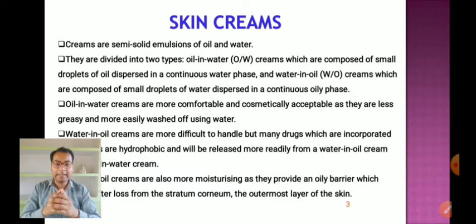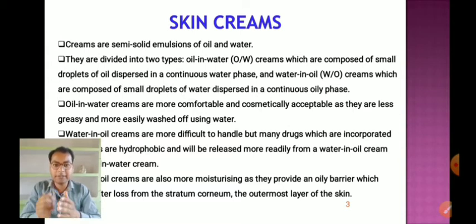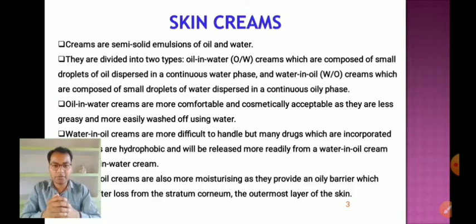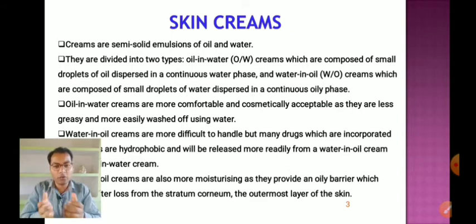First, we will discuss what skin creams are. Creams are basically a type of emulsion. Emulsions are biphasic liquid dosage forms which contain two immiscible liquids made miscible with the help of an emulsifying agent. The emulsifying agent stabilizes the unstable emulsion. The main ingredients in emulsions are emulsifying agents.